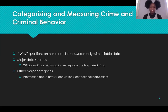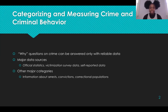Chapter 2 is on measuring crime and criminal behavior. Last week we were on Chapter 1, which was an overview of crime and criminology. The first section of Chapter 2 begins with categorizing and measuring crime and criminal behavior. Gauging the extent of a crime means discovering how much of it there actually is, where and when it occurs most often, and among which social categories it occurs most frequently. It helps to have knowledge of the patterns and trends of the problem over time.